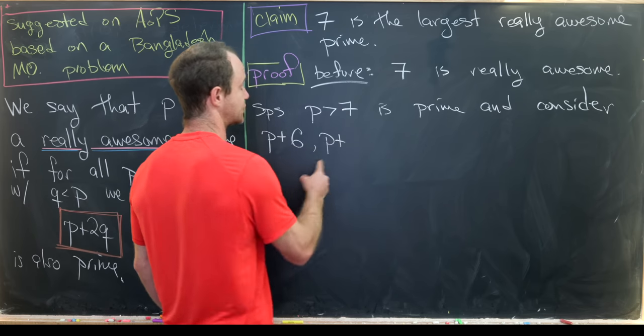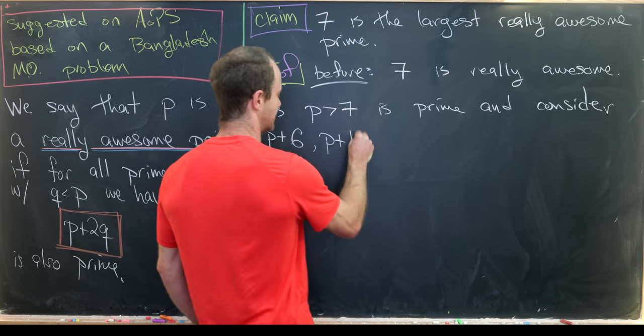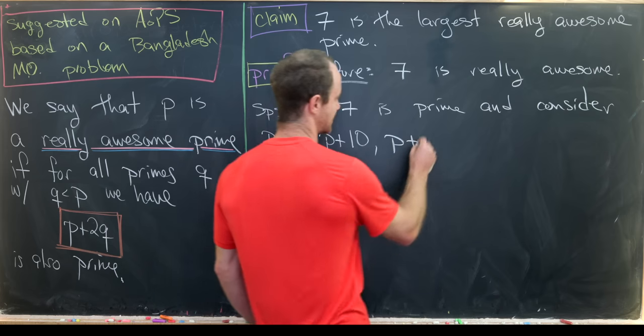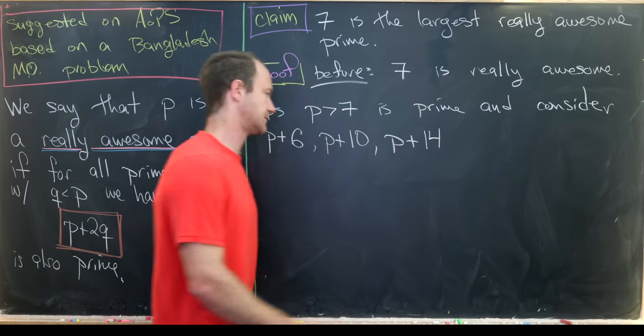Let's consider p plus 2 times 3, so that would be p plus 6. p plus 2 times 5, so that would be p plus 10. And then p plus 2 times 7, so that would be p plus 14.